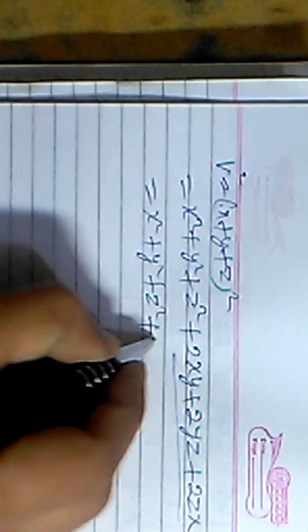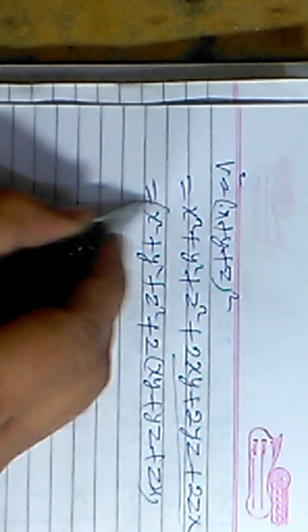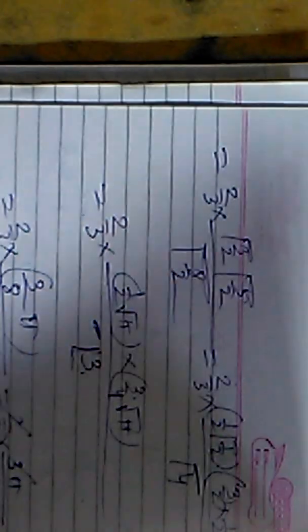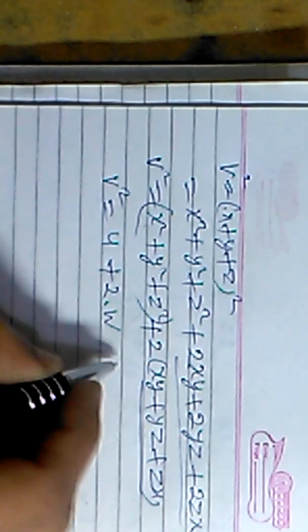To find the relation, we square v: v² = (x+y+z)² = x²+y²+z² + 2(xy+yz+zx). The first part x²+y²+z² is our u, and 2(xy+yz+zx) is 2w. Therefore the relation is v² = u + 2w.